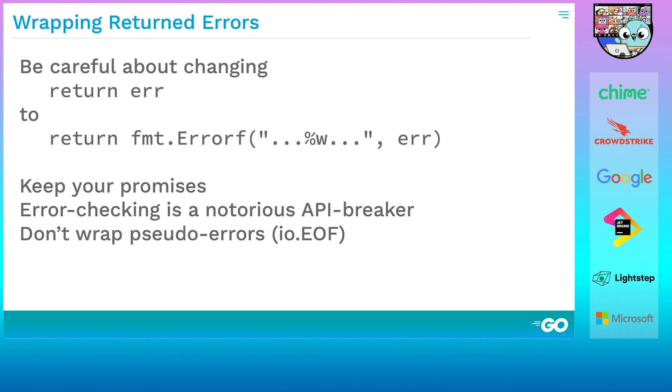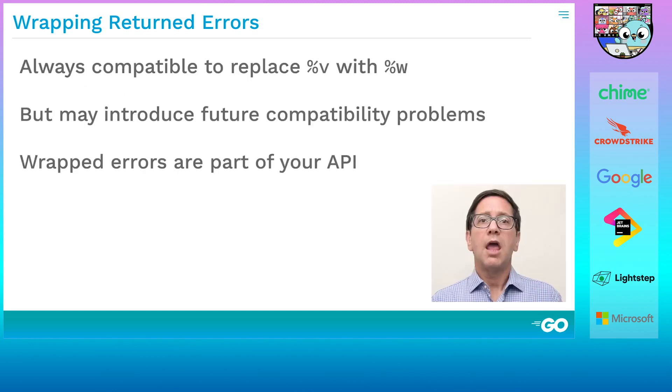If you're already using fmt.errorf with %v or %s to add context to an error, it's perfectly backwards compatible to switch to %w. You'll let programs get more information about the underlying error without changing the text message at all. Clients that formerly had to resort to string matching can now use errors.is or as to get the same information in a much nicer way.